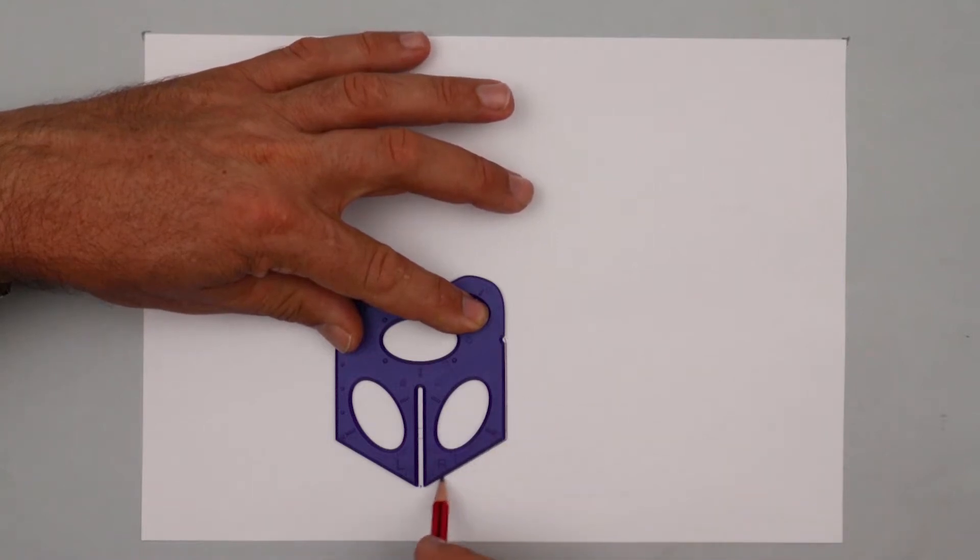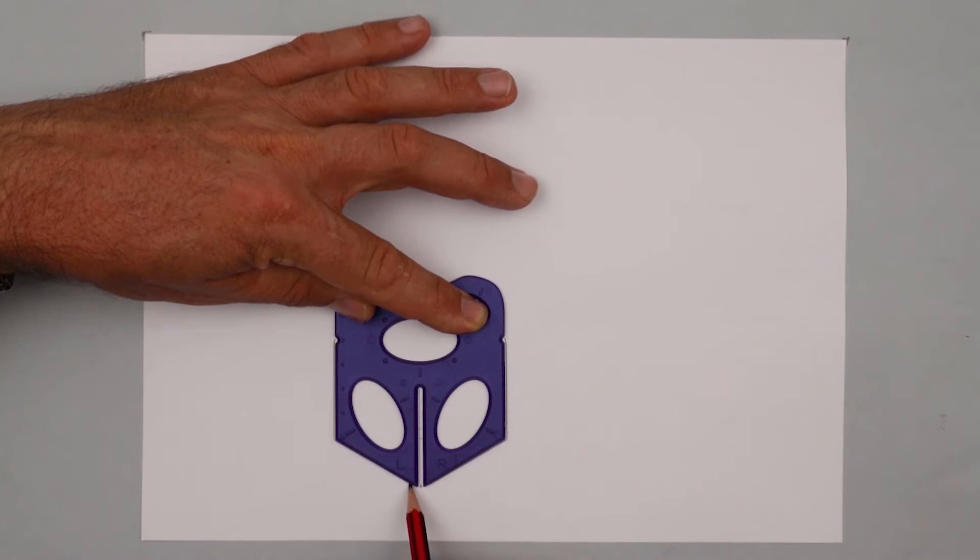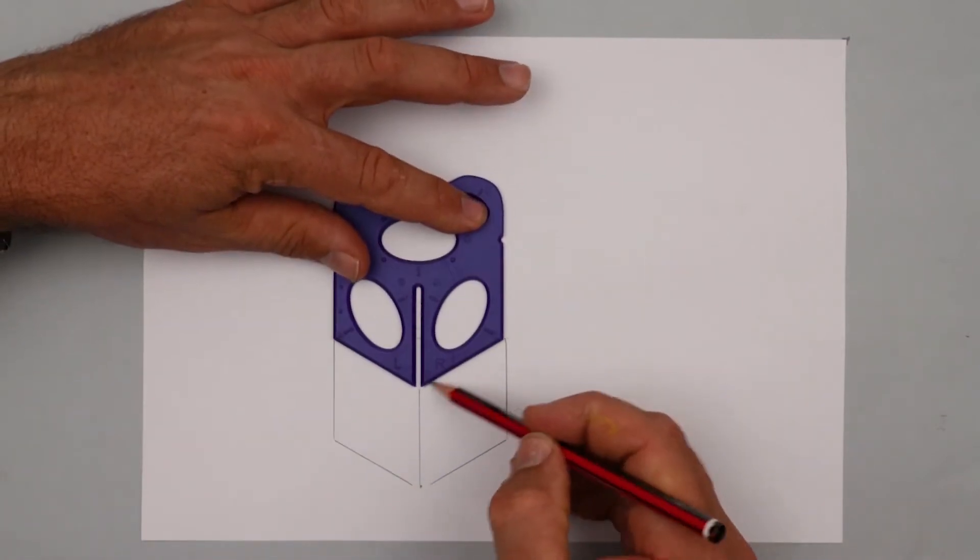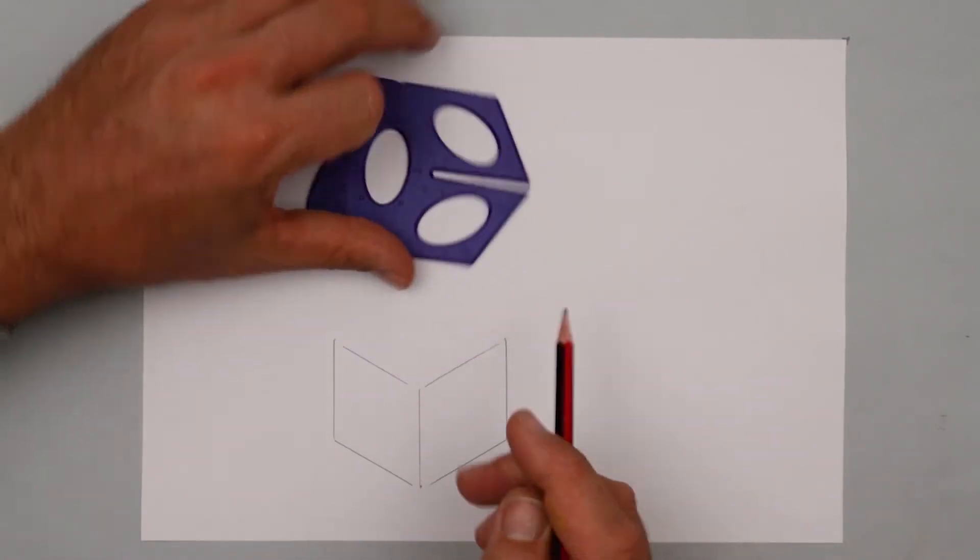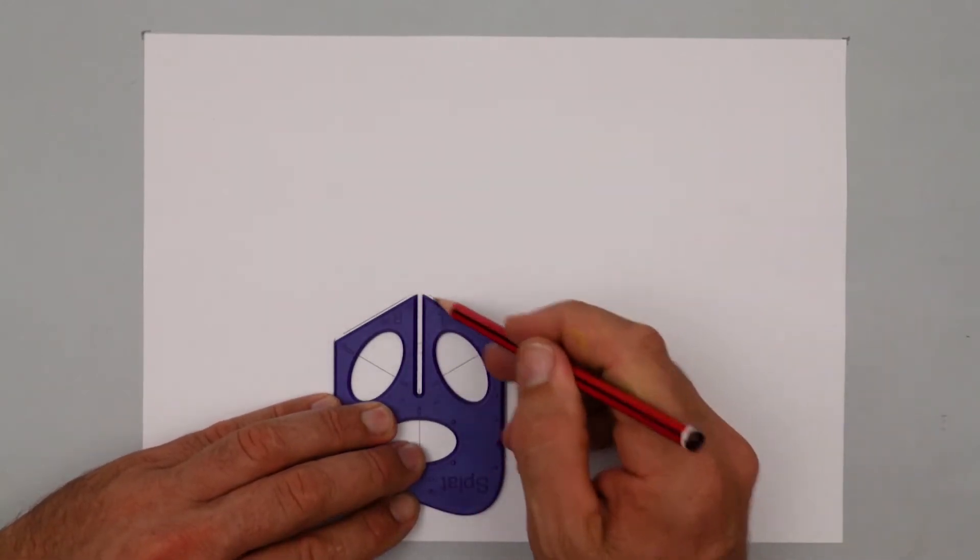For those of you who are using the splat for the first time, here's the three steps in drawing a cube. Slide up for step two and then rotate the splat, line up the corners, step three. Boom.